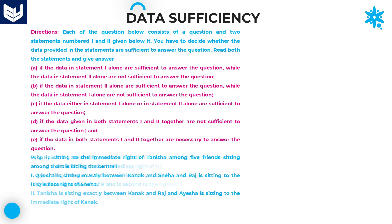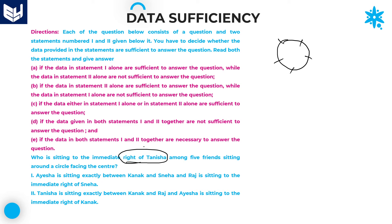Let us move on to the next question. Who is sitting immediate right of Tanisha among five friends sitting around a circle facing the center? We don't know who all five members are from the question alone, but one person is Tanisha, and the question asks who is sitting immediately to her right.